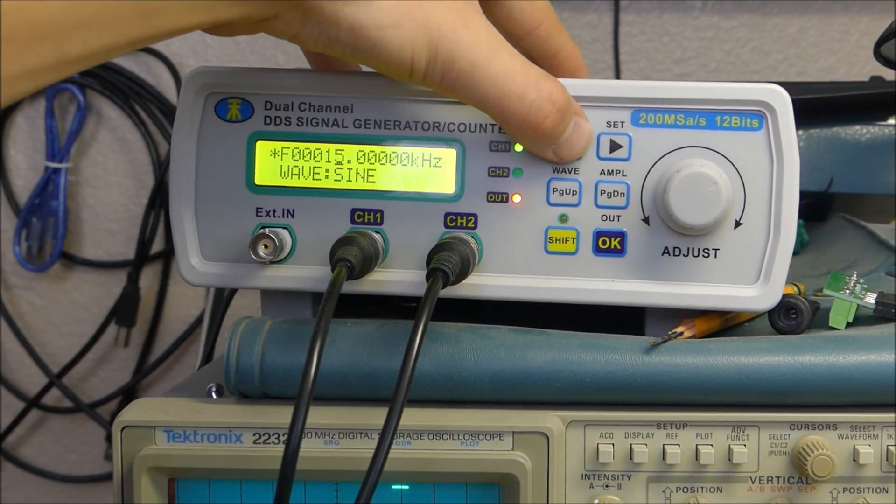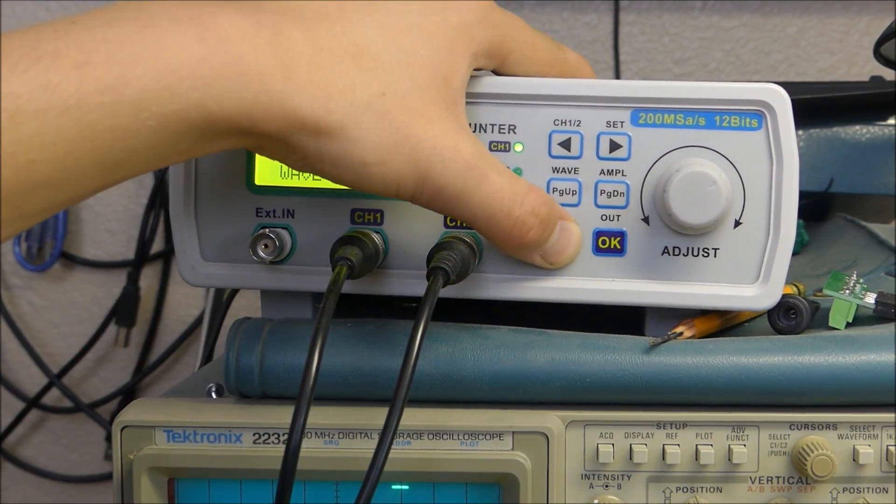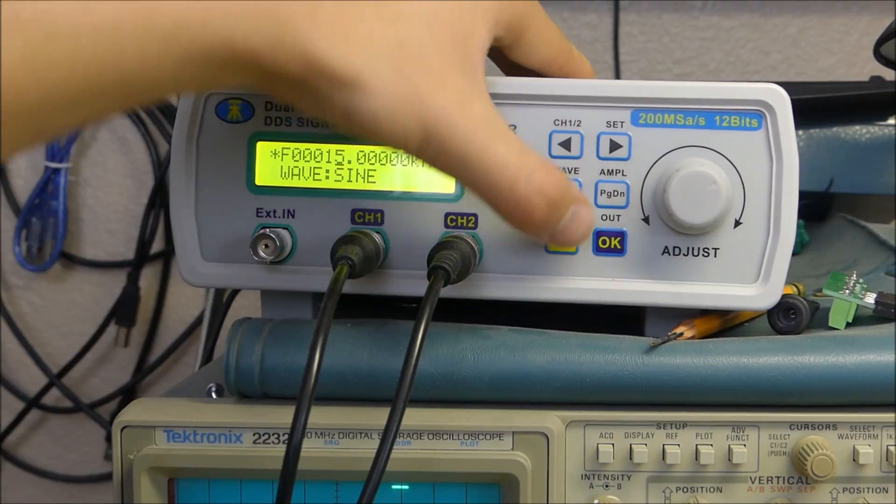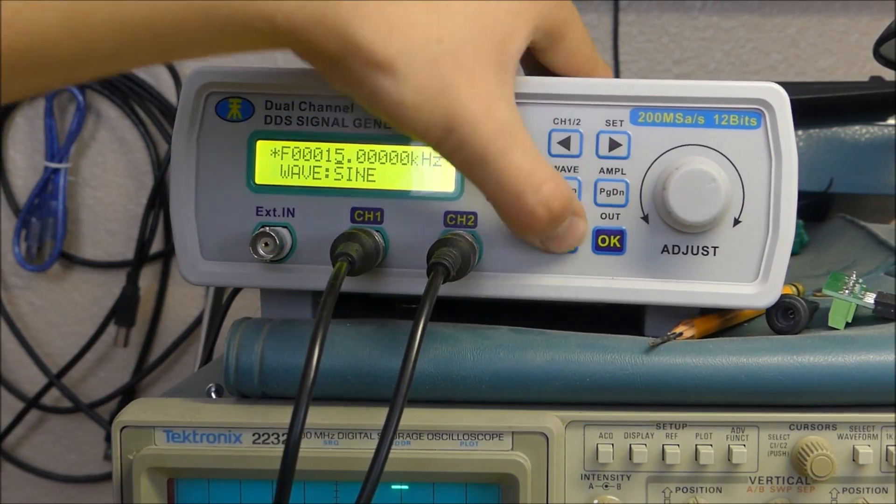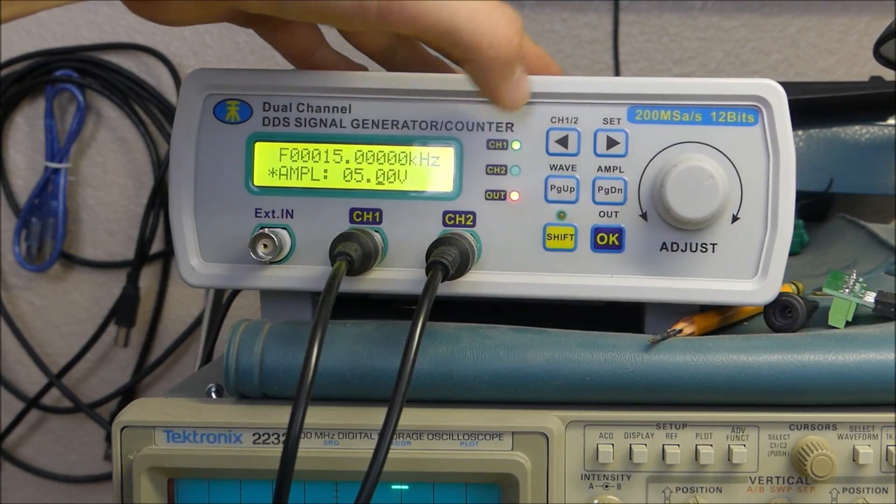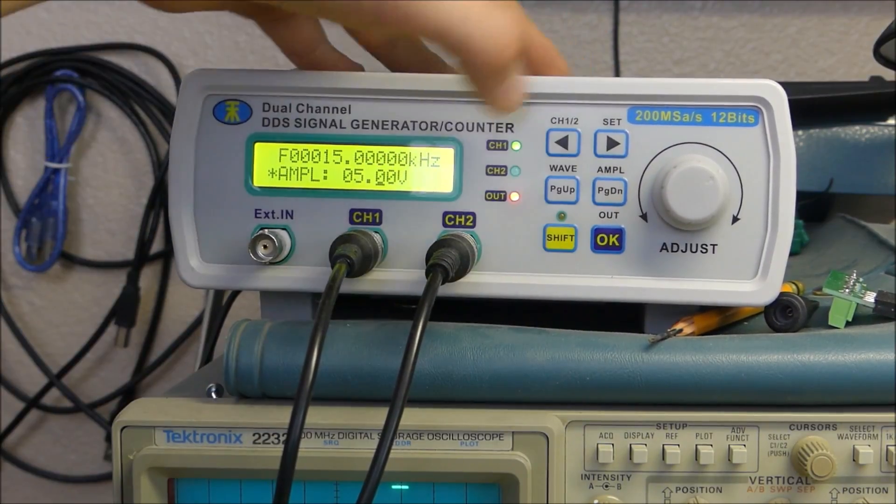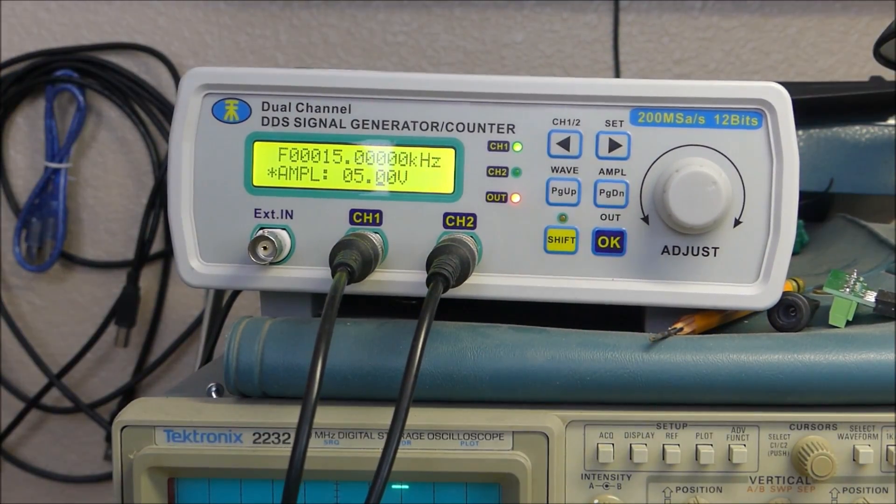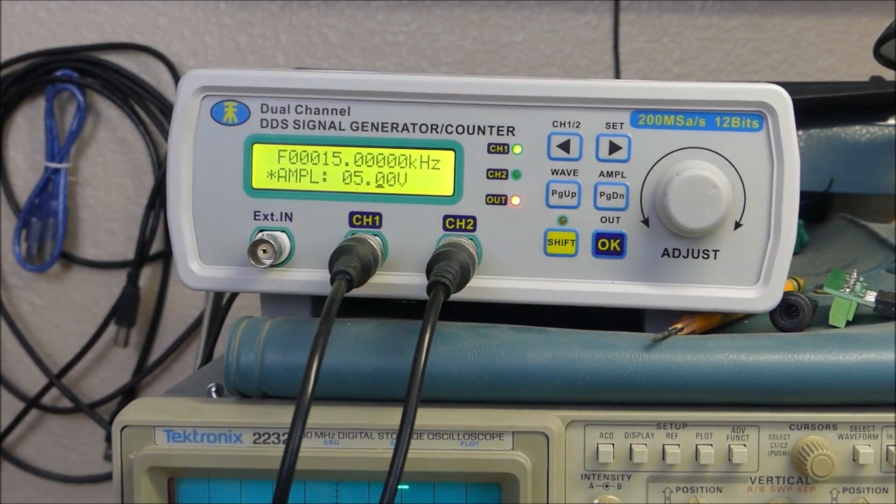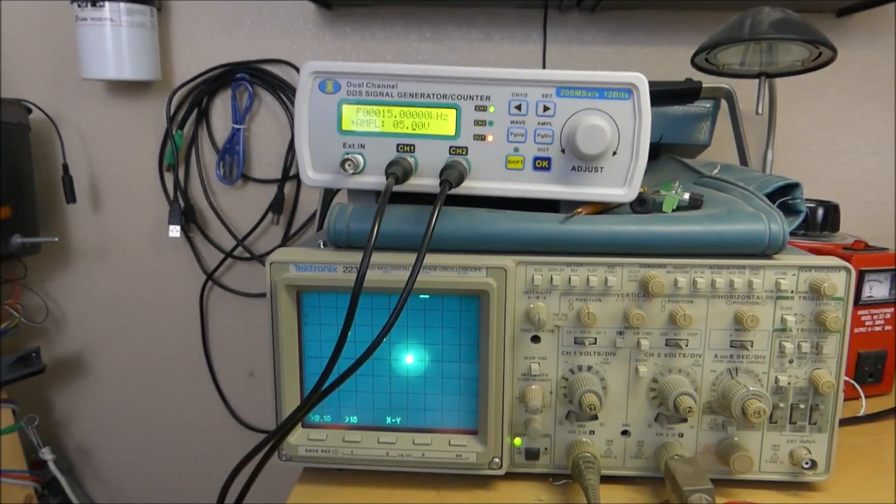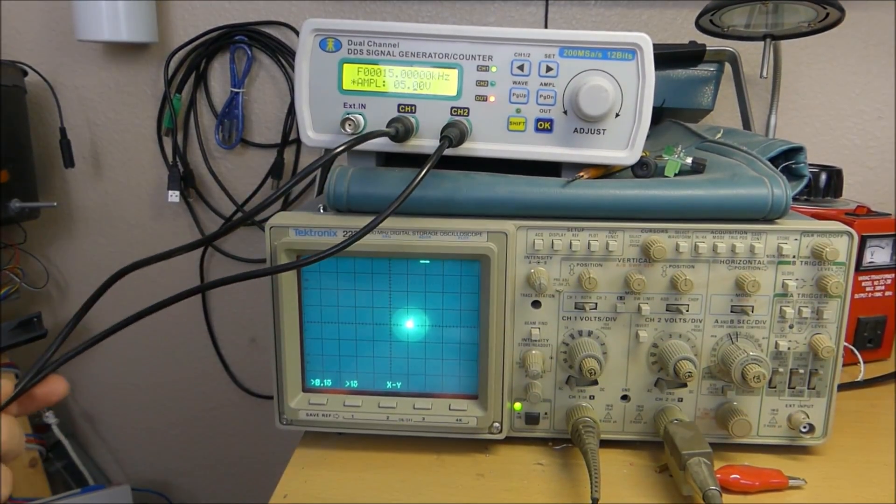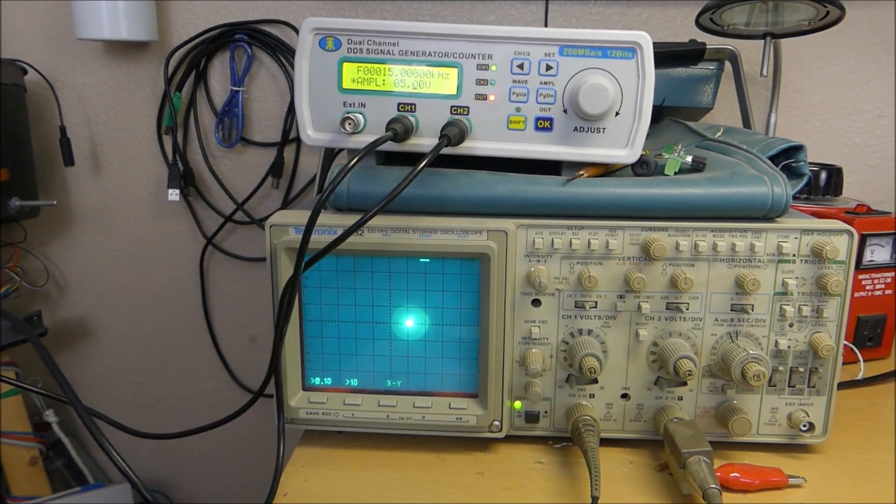I almost forgot - first of all you need to set up your function generator. You can switch to channel 2. These are both frequencies of 15 kilohertz. Now if we check on the amplitude, we can see on channel 1 the amplitude is 5 volts and channel 2 amplitude will be 5 volts. When we hook both of these connectors up to our oscilloscope we should see an approximate circle being produced on the screen.